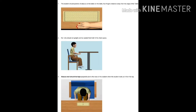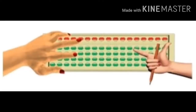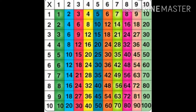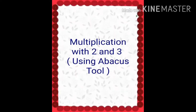Now before starting we will see how you should sit for doing Abacus. First of all put the Abacus on the table. Sit straight on your chair and don't lean on the table. Then hold the Abacus from your left hand side and operate with the right hand. It is very important to learn the tables from 2 to 20.